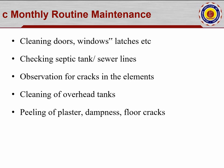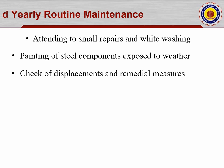Peeling of plaster, dampness, floor problems — patchwork to be taken care of — also comes under monthly maintenance. Lastly, yearly routine maintenance includes small repairs and whitewashing. Before whitewashing, all patchwork and any developed cracks should be arrested. Painting of steel components exposed to weather — main gates, handrails in staircases or for elevation purposes — should be done yearly. Checking of displacements and remedial measures is also important. If the structure is near black cotton soil on either side, compound walls may start to crack or sink, and that needs to be addressed in yearly maintenance.